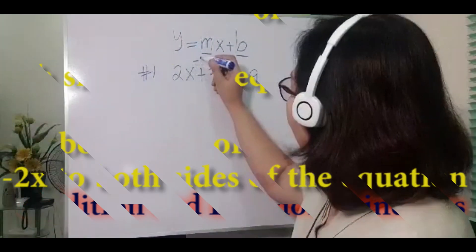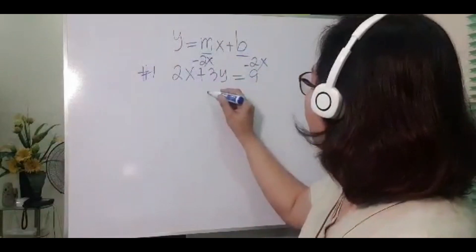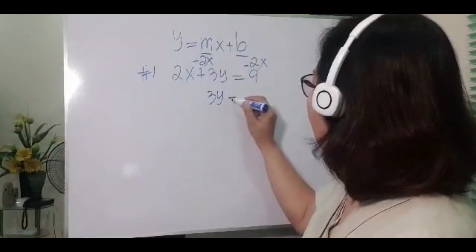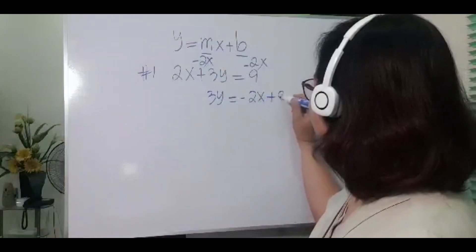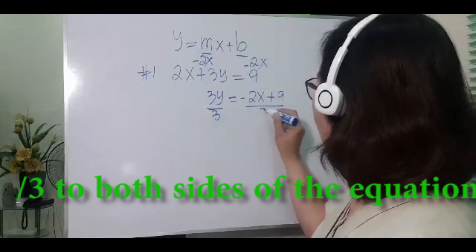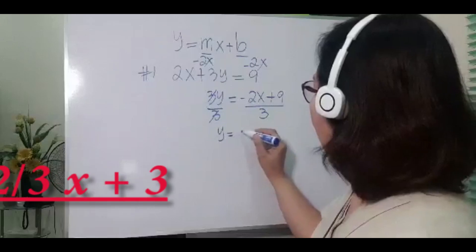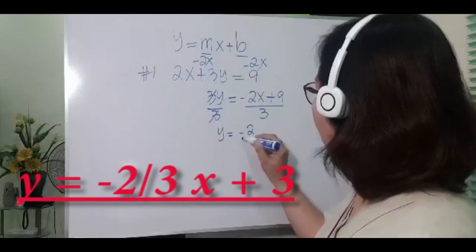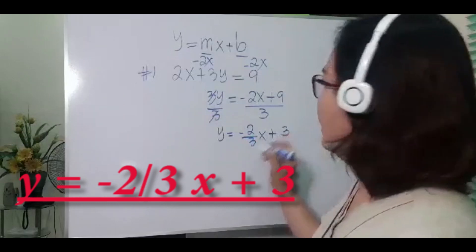We have 2x plus 3y, minus 2x from both sides. 3y equals negative 2x plus 9, over 3. So 3y is equal to negative 2 over 3x plus 3.